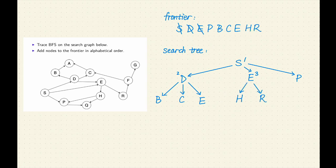Step 4. The oldest node added to the frontier was P. P is the fourth node expanded. Remove P from the frontier. P is not a goal. Let's expand P. P has one successor, Q. Add Q to the frontier and to the search tree.